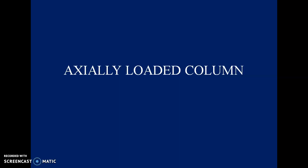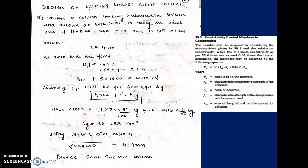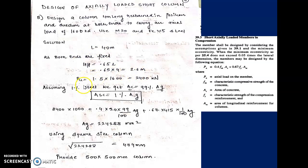We will start with the axially loaded column. Design a column 4 meters long, restrained in position and direction at both ends, to carry an axial load of 1600 kN using M20 and Fe415. Length is 4 meters; as both ends are fixed, we refer Table 28 to find Le = 0.65L = 0.65 × 4 = 2.6 meters. The load of 1600 kN is factored to get the ultimate load of 2400 kN.